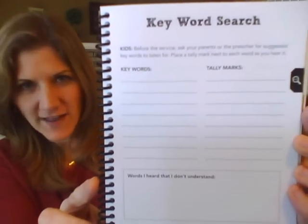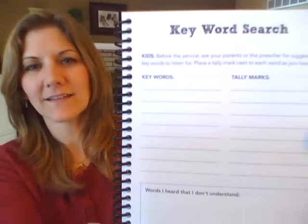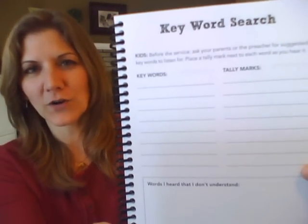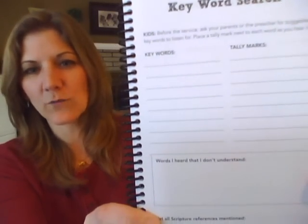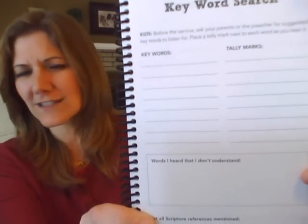Then we have Keyword Search. It's similar to Keyword Alphabet, except this one needs a little advanced preparation and your parents' help. You'll want to have some keywords listed that you're going to listen for, and then next to each keyword, write a tally mark each time you hear the word. Any words you hear that you didn't understand, just spell them as best you can and write them in the box — your parents can explain those words to you after church or on the way home.